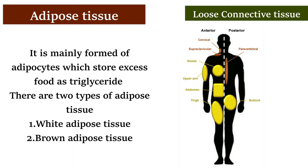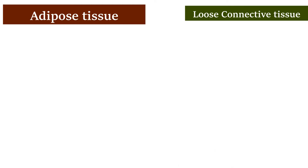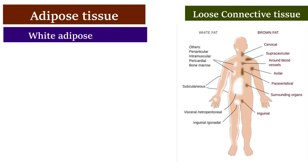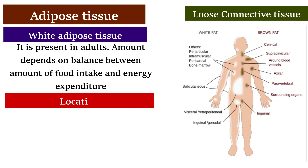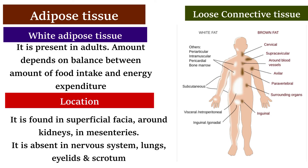There are two types of adipose tissue: white adipose tissue and brown adipose tissue. White adipose tissue is present in adults and its amount depends on the balance between food intake and energy expenditure. It is found in superficial facial adipose tissue, around the kidneys, and in mesenteries. It is absent in the nervous system, lungs, eyelids, and scrotum.